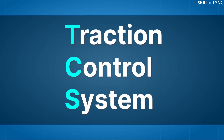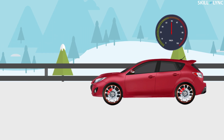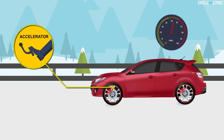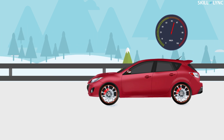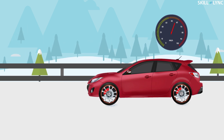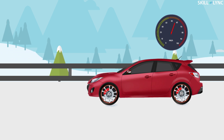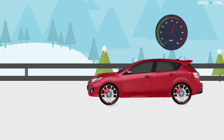Welcome back to the channel. In this video we will learn about the traction control system in automobiles. Imagine a situation where you are driving a car on a slippery road. When you try to accelerate in this slippery condition, the wheels slip. If the wheels spin without any grip, the vehicle will not get accelerated even though you apply more throttle, and it may lead to an uncontrollable situation.